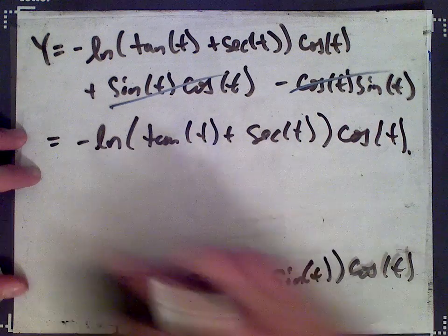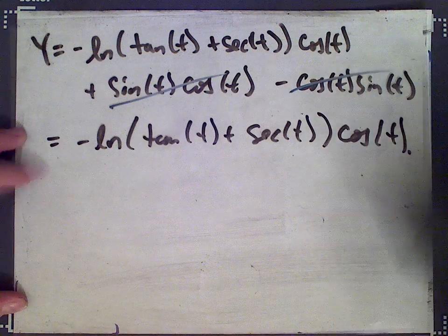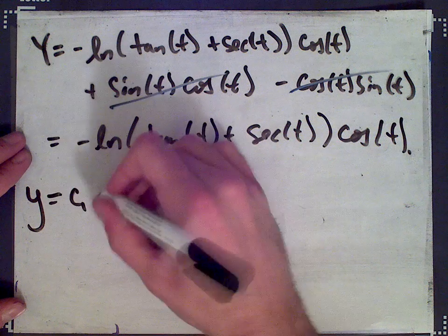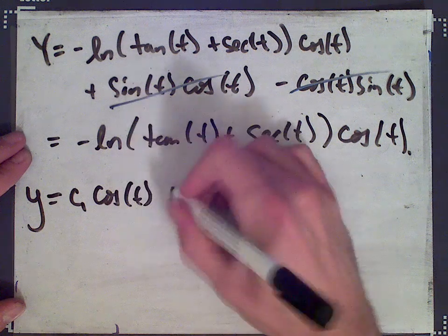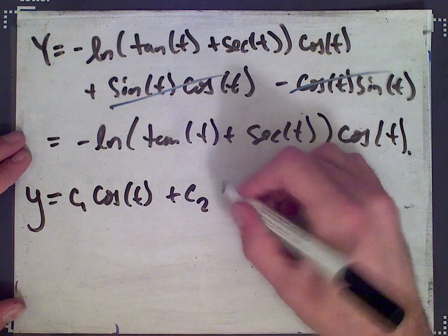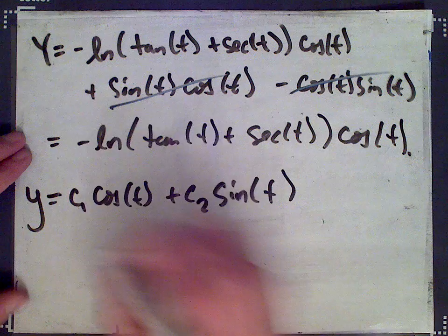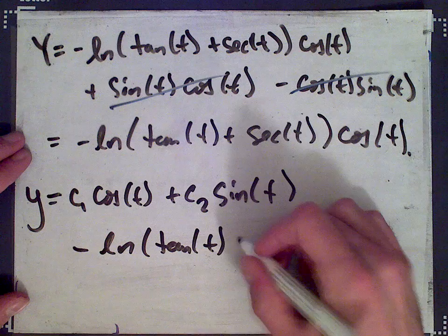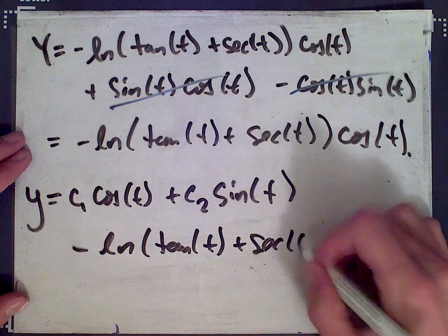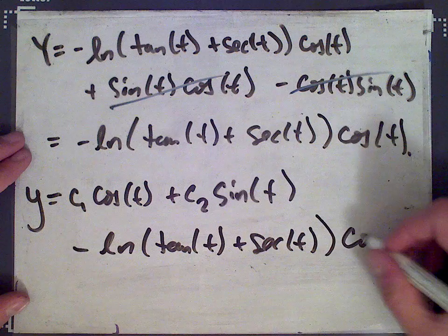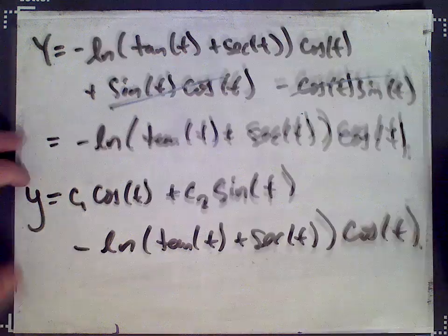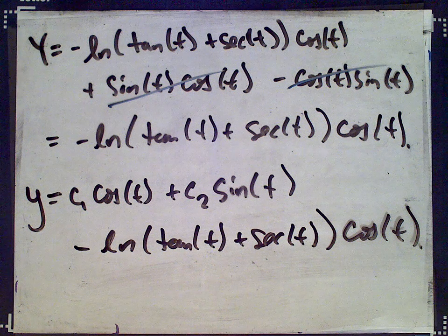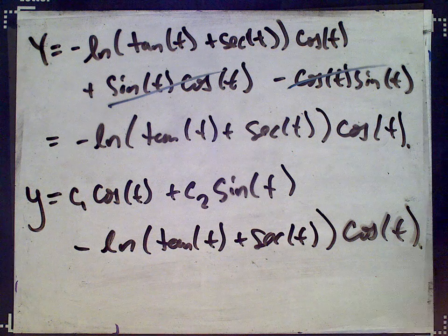Finally, the general solution is the homogeneous solution plus the particular solution: y equals c1 cos t plus c2 sin t minus ln of tan t plus secant t times cos t. And that's the solution to our differential equation. You can check that this actually solves the equation. Thank you.